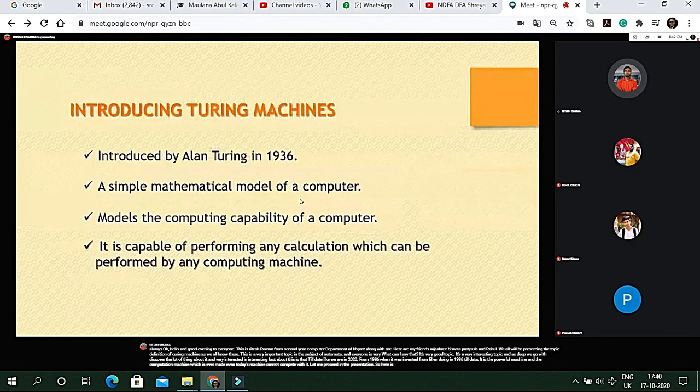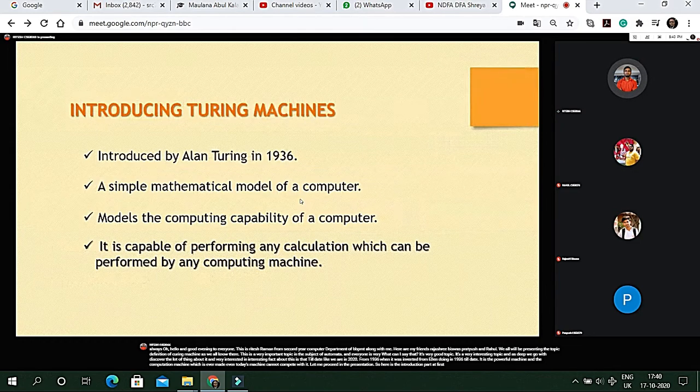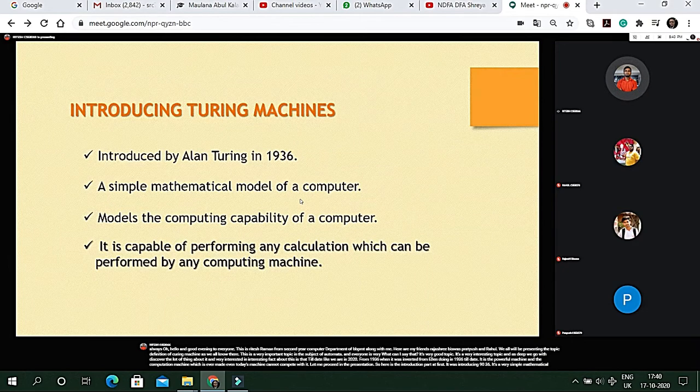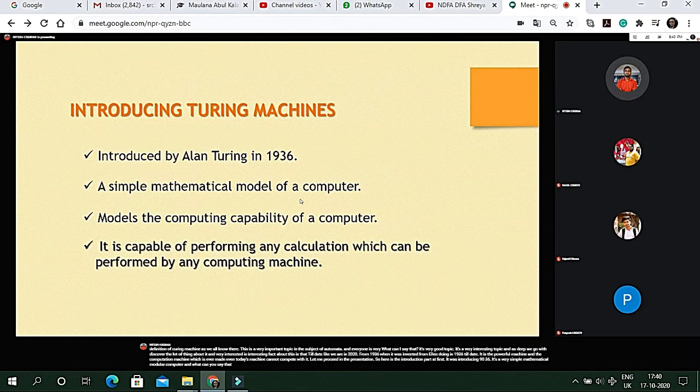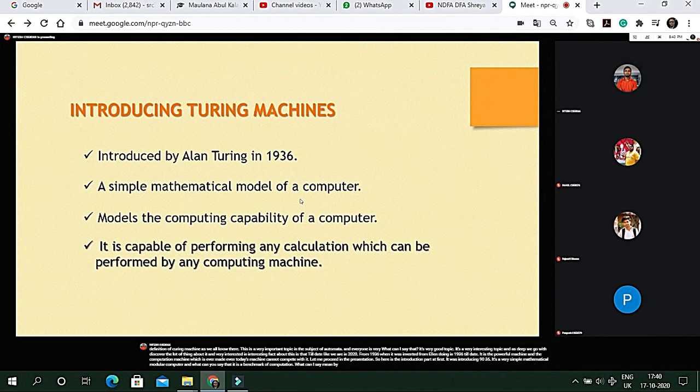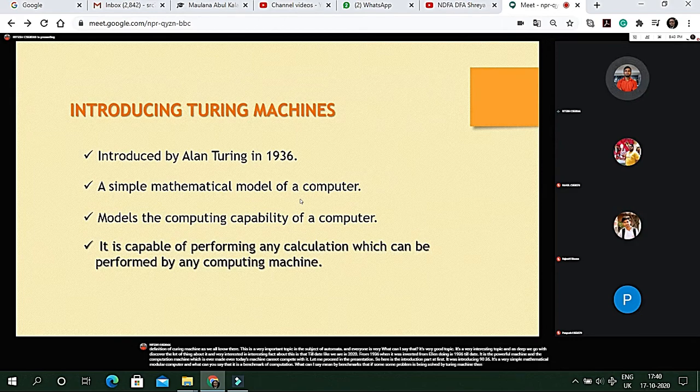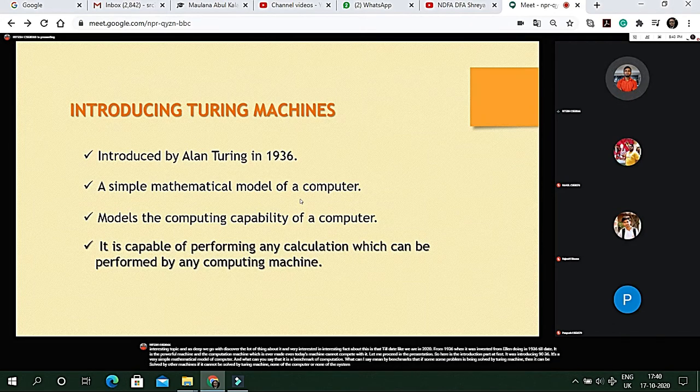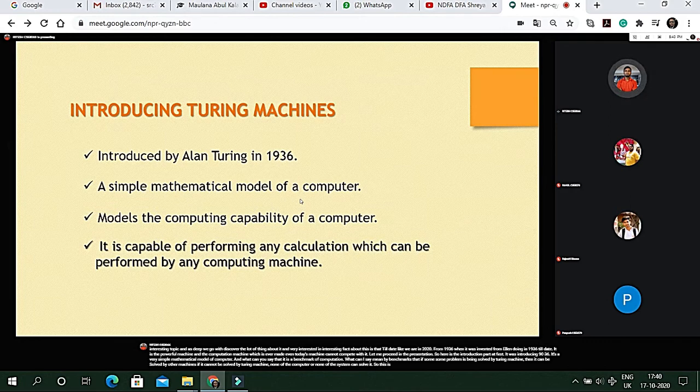So here is the introduction part. At first it was introduced in 1936. It's a very simple mathematical model of computer and it is a benchmark of computation. What we mean by benchmark is that if some problem is being solved by Turing machine, then it can be solved by other machines. If it cannot be solved by Turing machine, none of the computer or system can solve it. It's the most powerful machine ever made.